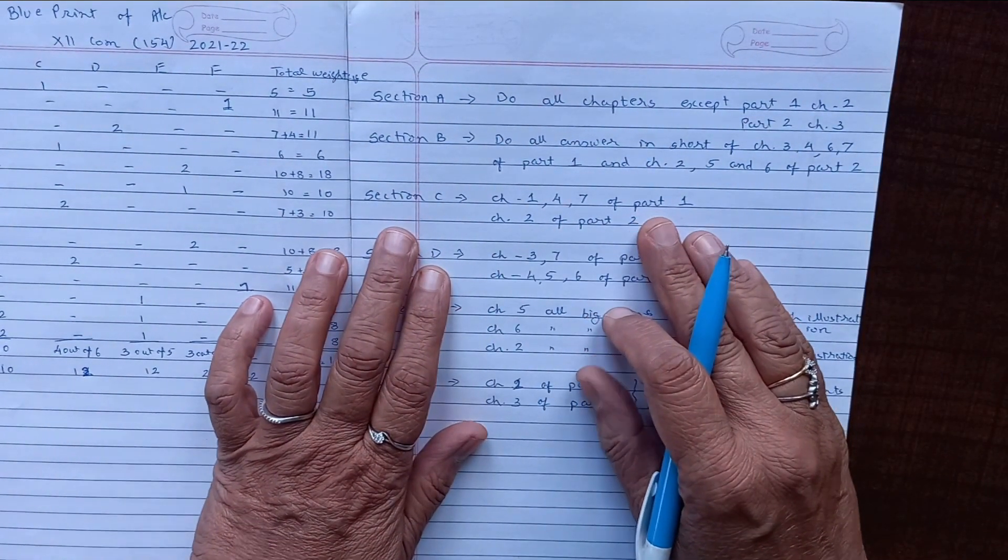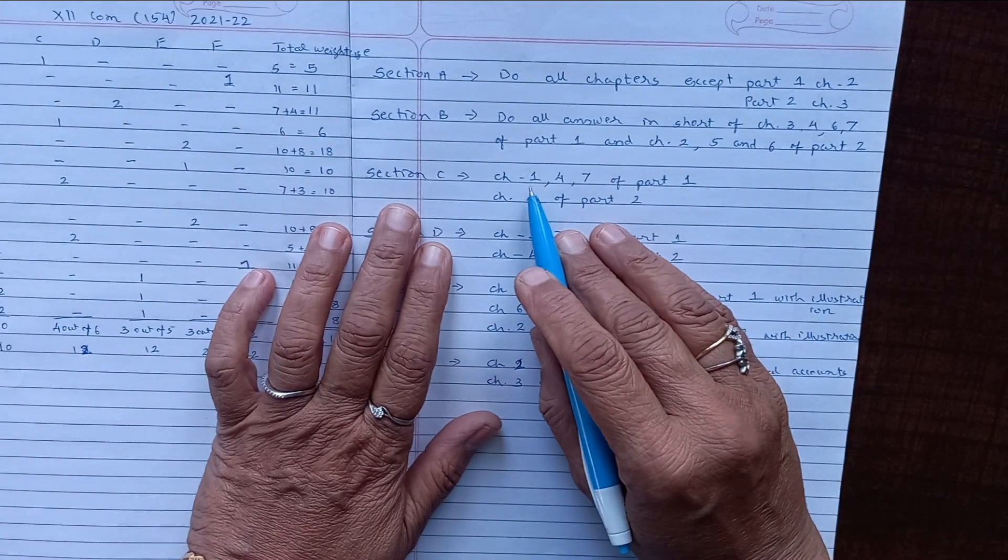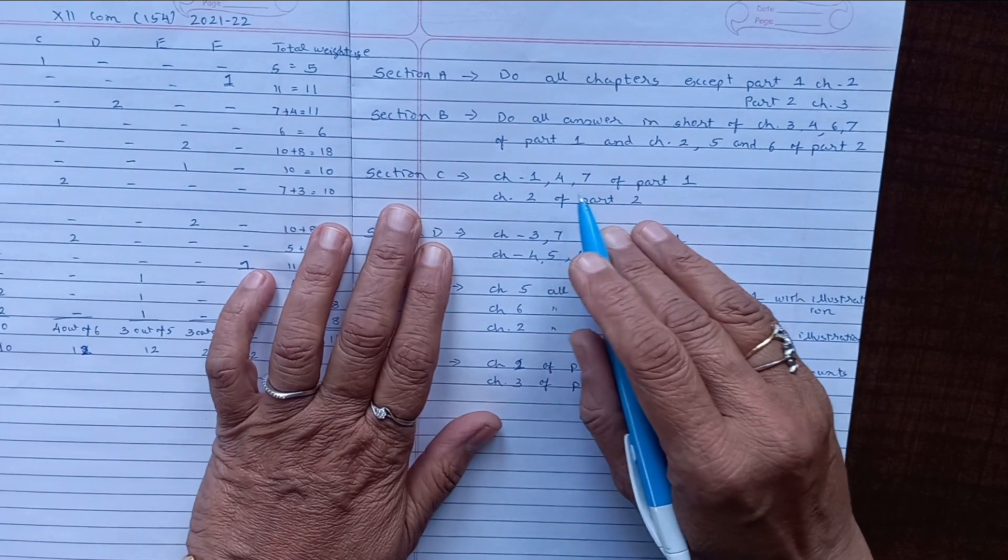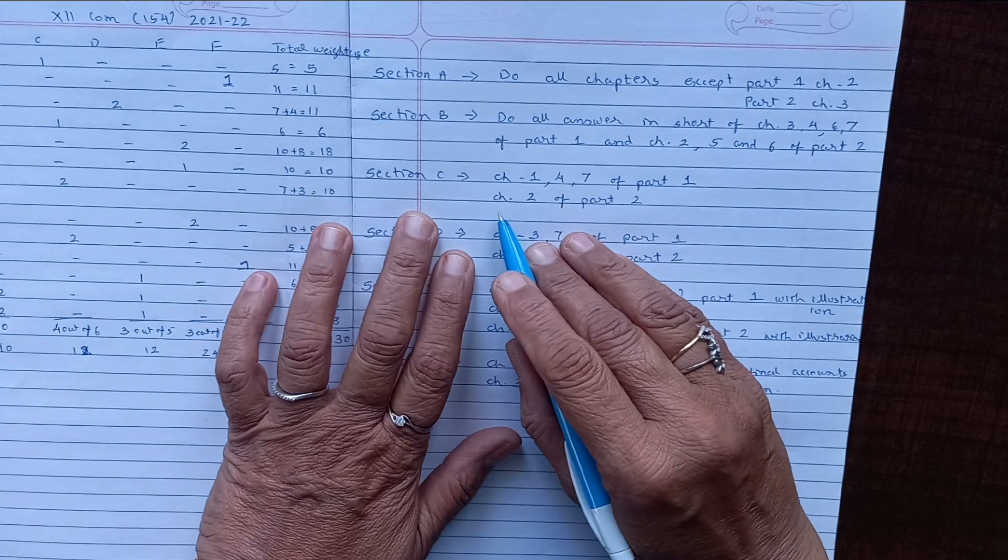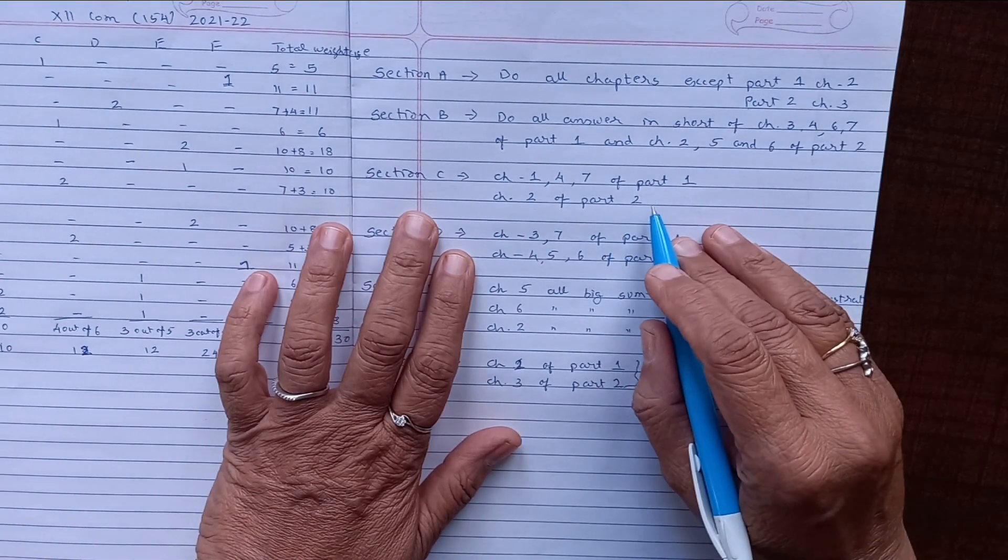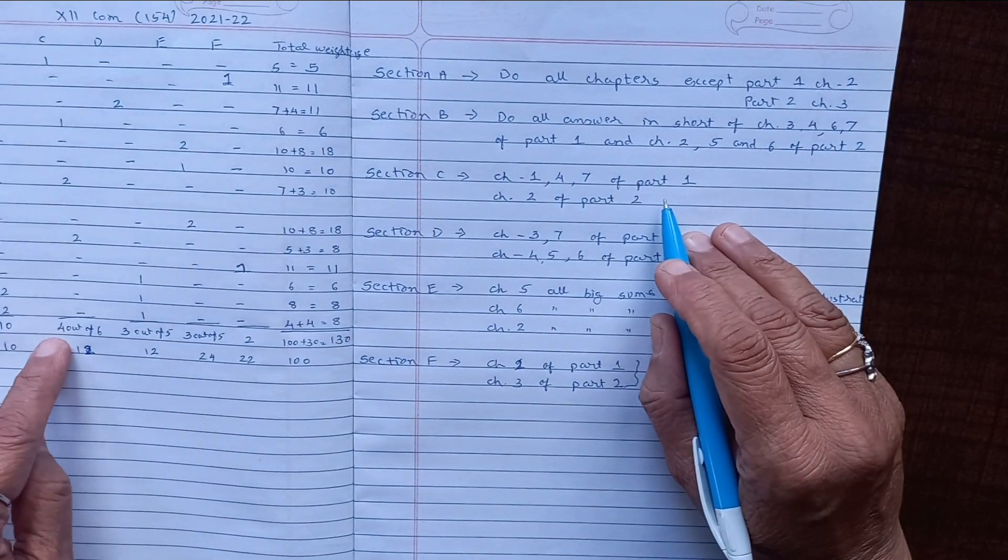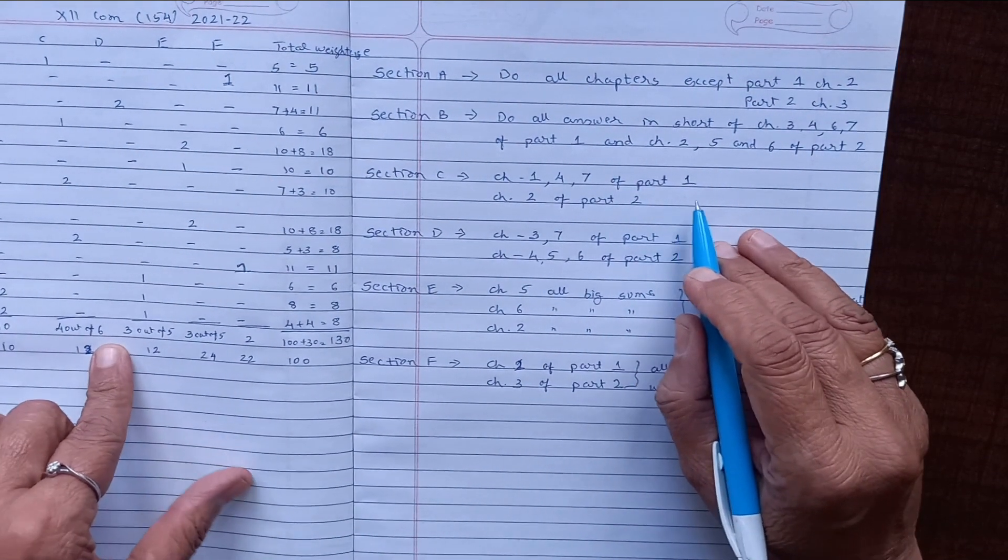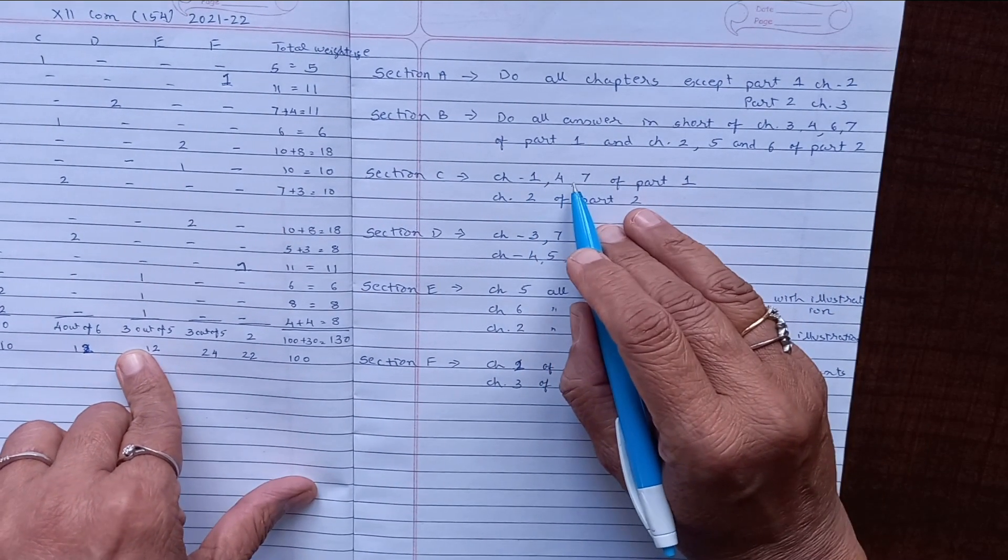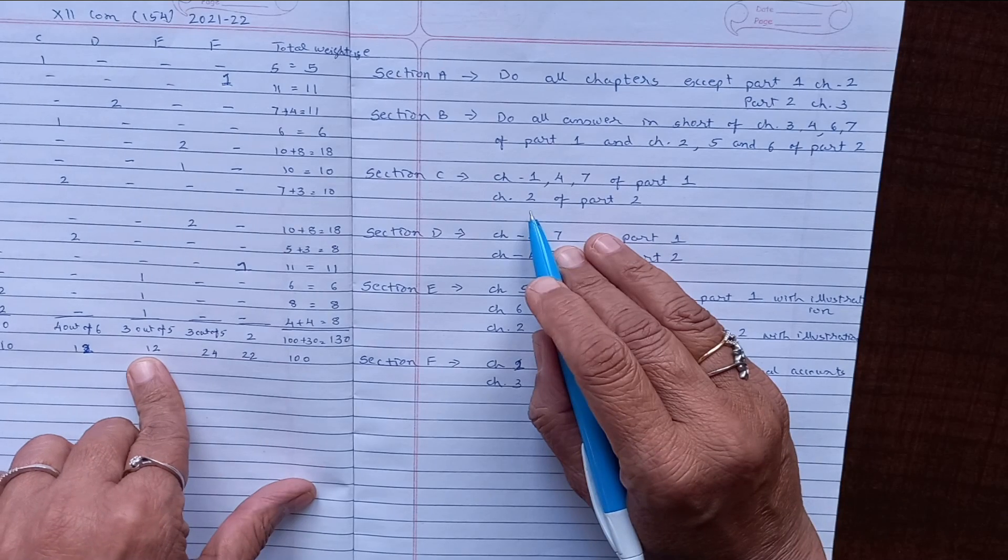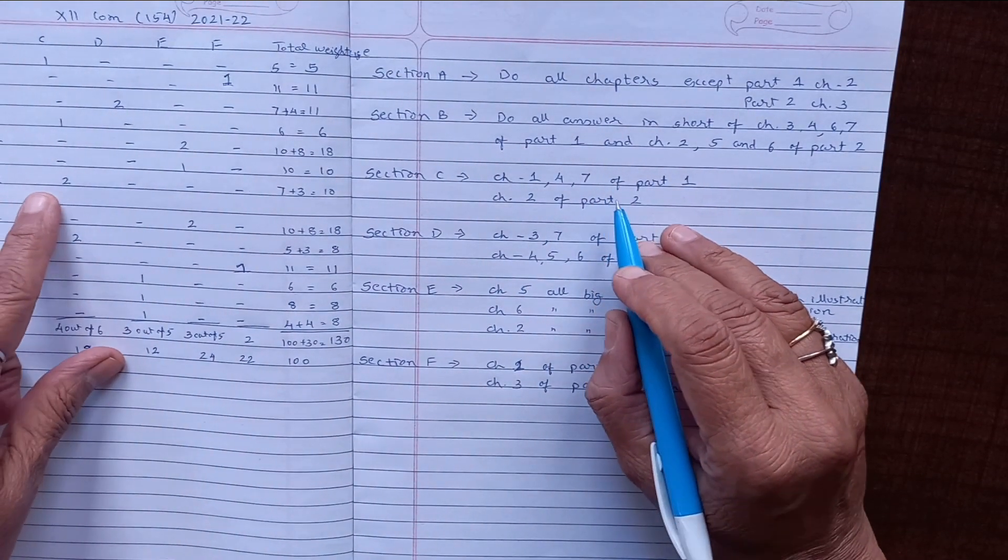For Section C, precisely they have selected chapter number 1 of part one, chapter 4, and chapter 7. Here in the C section, you have to answer only four questions out of six. So here you have chapter 1, 2, 3, and the fourth one.